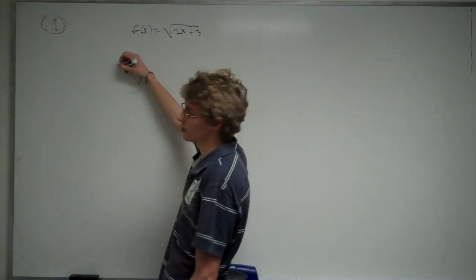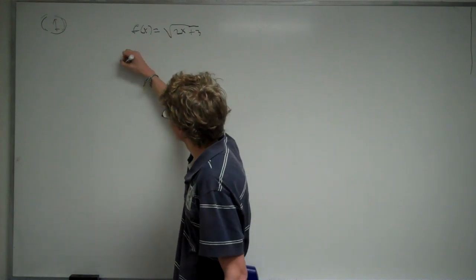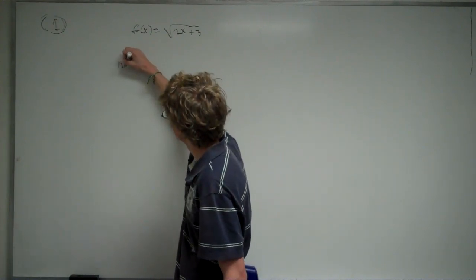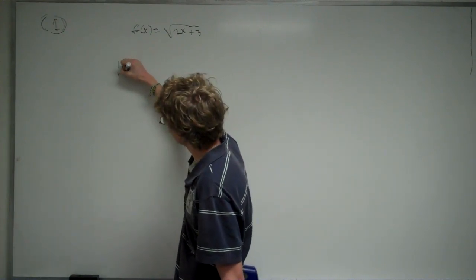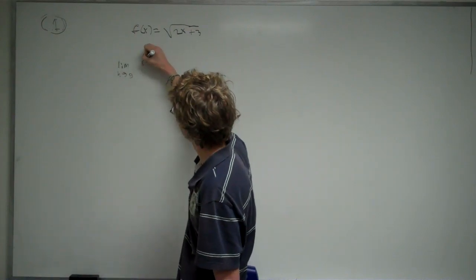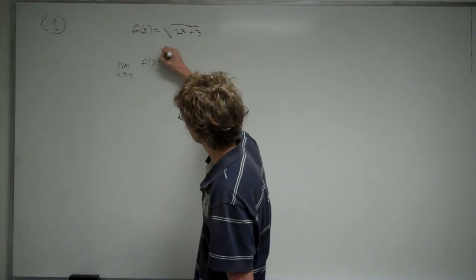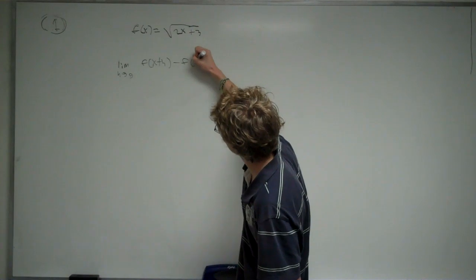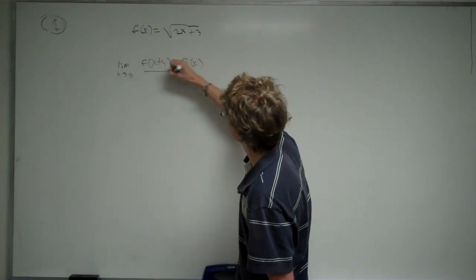Now, the formula we use to find the slope using limits is the limit as h approaches 0 of f of x plus h minus f of x all over h.